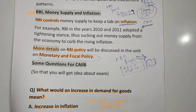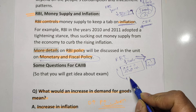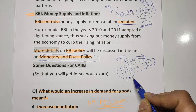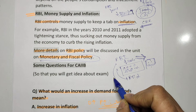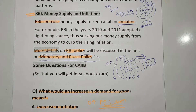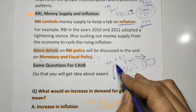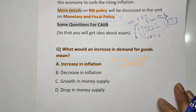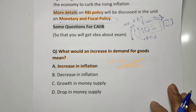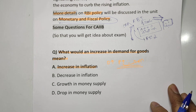RBI can infuse money by decreasing the rate of interest. By increasing CRR and SLR, RBI can suck money from the market. This is how RBI controls inflation — by sucking money out or infusing money in, using tools like CRR, SLR, and interest rates.